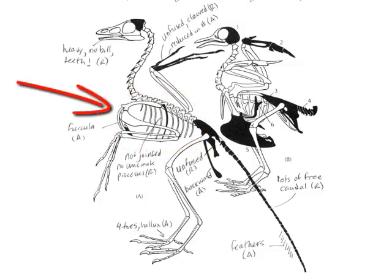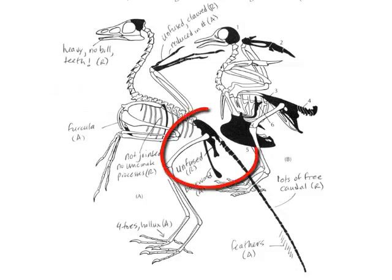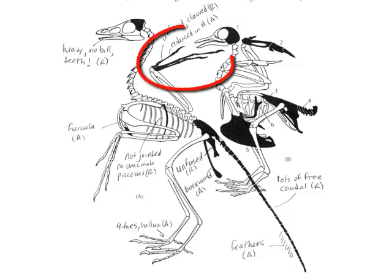Fourth, the pectoral girdle, on the other hand, is very avian — there are fused clavicles that form a furcula. Fifth, the pelvic girdle contains both avian and reptilian characteristics: three pelvic bones held together by ligaments, not fused as in birds, but the backward-facing pubis is distinctly avian. The arms and hands also show both traits: the ulna is unusually stout and there are unfused, clawed digits — very reptilian — but feathers are present and the number of digits is reduced, which is avian.